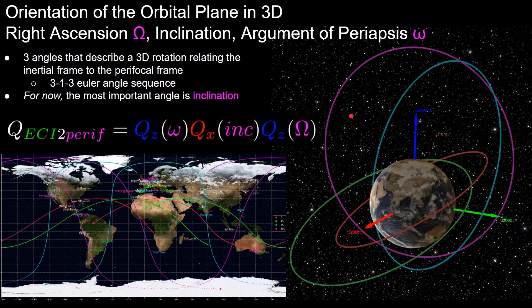Next up are the three orbital elements that describe the orbital plane with respect to the inertial frame. For those familiar with Euler angles, the right ascension, inclination, and argument of periapsis are the angles of a 3-1-3 Euler angle sequence describing the rotation between the inertial frame and the perifocal frame. The perifocal frame is defined with the x-axis pointing towards periapsis, the z-axis pointing in the angular momentum direction perpendicular to the orbital plane, and the y-axis completing the right-handed system. We'll focus individually on each of the three angles for now.